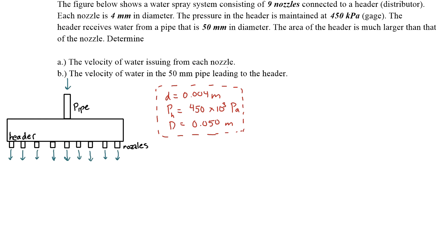Today we're going to go over this fluid mechanics problem. The figure below shows a water spray system consisting of nine nozzles connected to a header or distributor. Each nozzle is four millimeters in diameter. The pressure in the header is maintained at 450 kilopascals gauge. The header receives water from a pipe that is 50 millimeters in diameter.